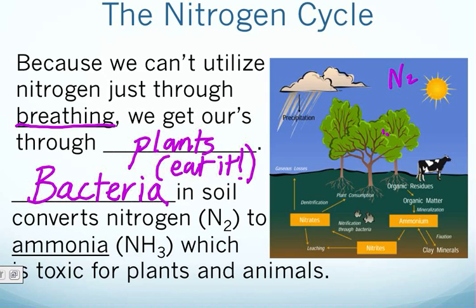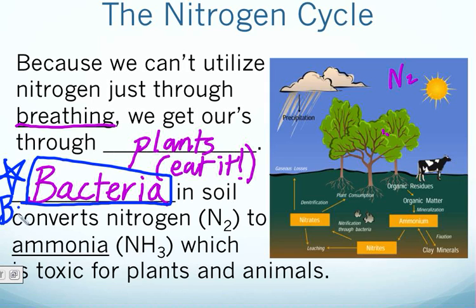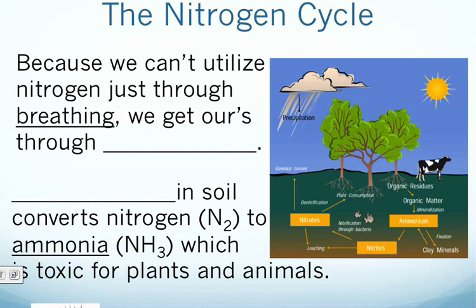Make sure bacteria stands out to you — star it, circle it, highlight it. Bacteria is an important player within the nitrogen cycle; it's like the BFF of the nitrogen cycle. Without bacteria, this cycle would not work. Bacteria in the soil converts N2 into a different type of nitrogen called ammonia, NH3. Ammonia is bad — it is toxic for plants and animals; we can't use it.